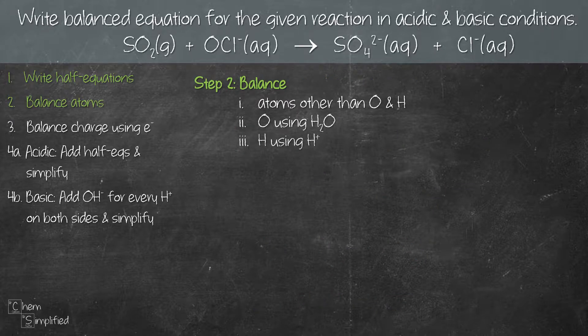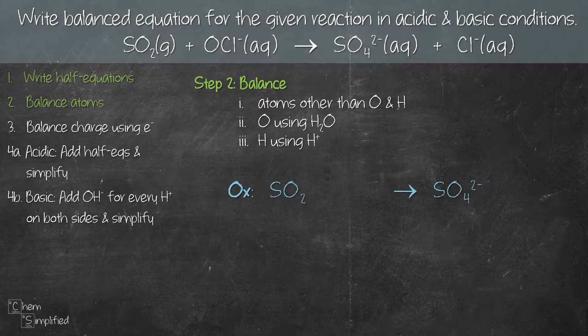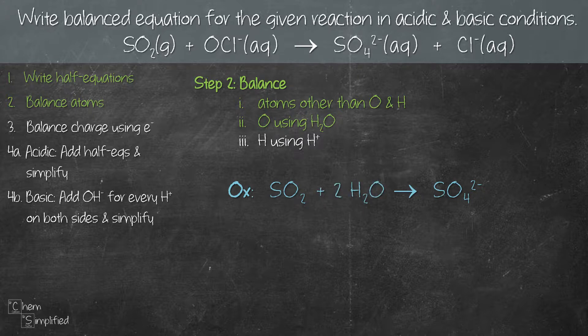Next, step 2: we need to balance the atoms in this order. We start by balancing all atoms besides O and H, so that means we need to balance S first. Starting with our oxidation equation, S is already balanced — one S on each side. So we move on to balancing O using H₂O. On the left hand side we have 2O, on the right hand side we have 4O, so we need to add 2H₂O on the left hand side.